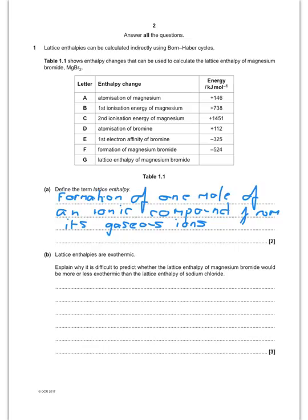So for lattice enthalpy, it's formation of one mole of an ionic compound from its gaseous ions. That's not bad for two marks to start off.